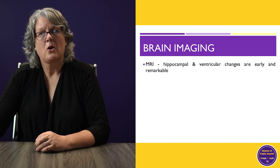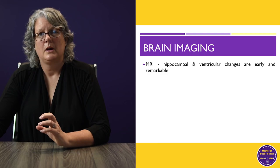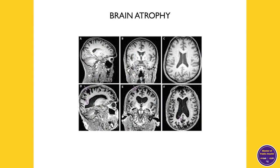MRI gives us a clue. One of the main characteristics of dementia is hippocampal atrophy and enlarged ventricles. Here's an example of brain atrophy — along the top are three views of a healthy brain, and along the bottom you can see differences in the brain of someone who has dementia. The ventricles — those dark areas — are much larger, and the hippocampus has atrophied as well.